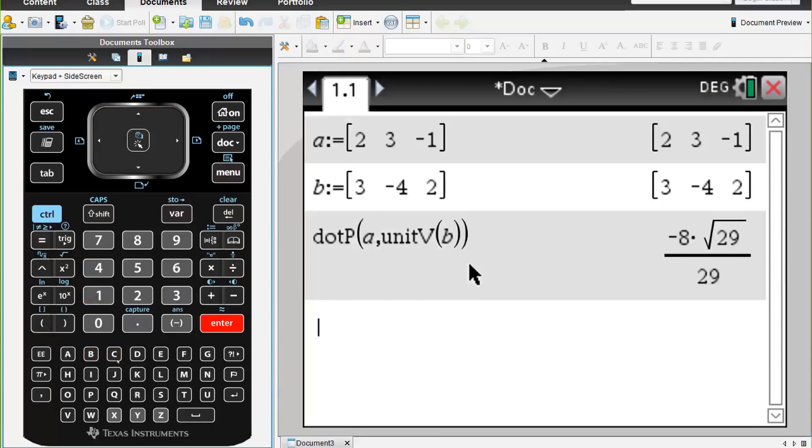So the scalar resolute of vector a in the direction of b is minus 8 root 29 divided by 29.